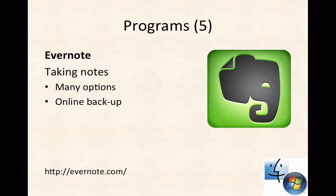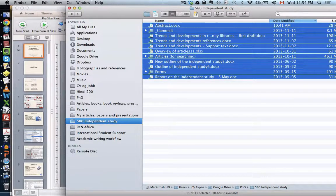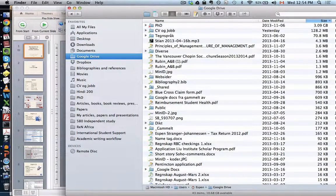Use Dropbox or Google Drive for automatic backup. Google Drive requires installing a separate program — even if you have a Google account, it doesn't come automatically. Once installed, a Google Drive folder appears on your computer and everything in it syncs automatically. Green dots indicate synced files.